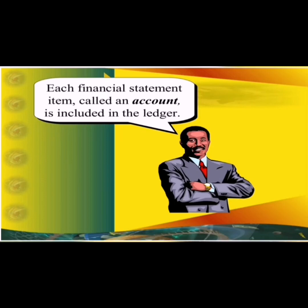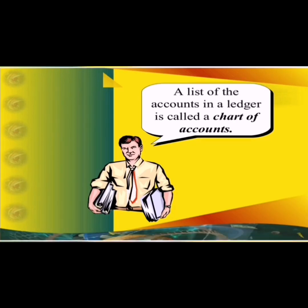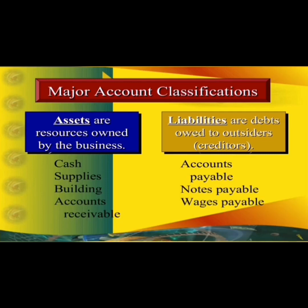Each financial statement item called an account is included in the ledger. What is a ledger? A group of accounts for a business entity is called a ledger. You can say all accounts are kept in a book, and the name of that book is the ledger book. It is the mother book where all accounts are kept. A list of accounts in a ledger is called a chart of accounts.